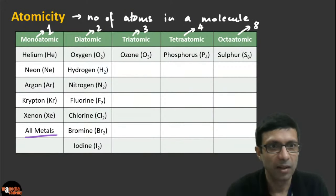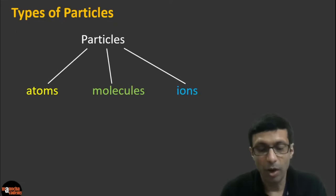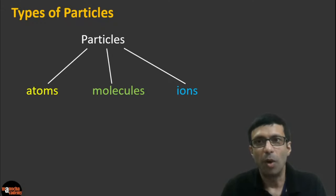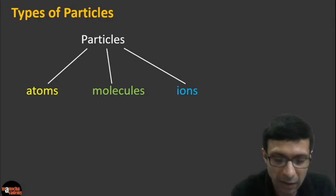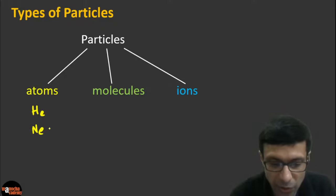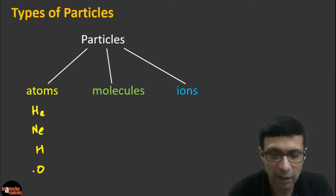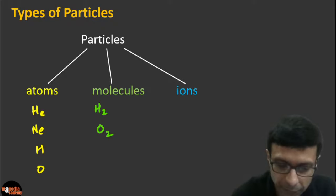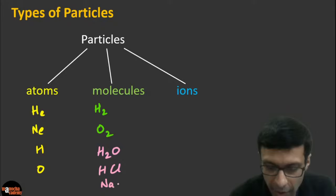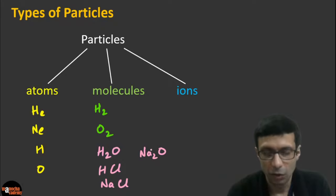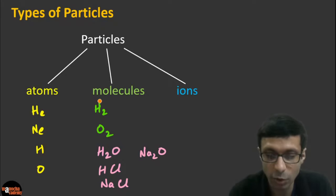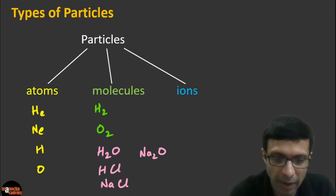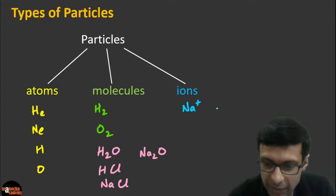What are the particles we talked about today? We talked about atoms, molecules, and ions. These are the different types of particles. Atoms of the noble gases exist as molecules on their own, though you can have individual hydrogen or oxygen atoms — they don't exist on their own, so you get H₂ and O₂. These are molecules of elements. And then you have molecules of compounds like H₂O, HCl, sodium chloride, sodium oxide — made up of atoms of different elements. Finally, ions are charged particles — cations like Na⁺ are positively charged, anions like Cl⁻ and oxide O²⁻ are negatively charged.